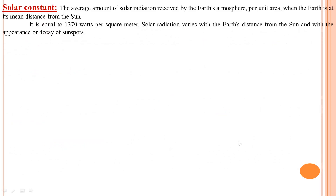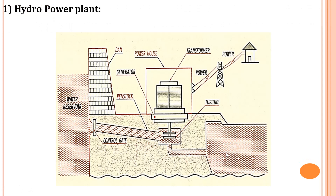Next is the solar constant. It is defined as the average amount of solar radiation received by the Earth's atmosphere per unit area when the Earth is at its mean distance from the sun. Measuring per one square meter area, we get 1370 watts per square meter of solar radiation. Solar radiation varies with the Earth's distance from the sun and the appearance or decay of the sun's force.